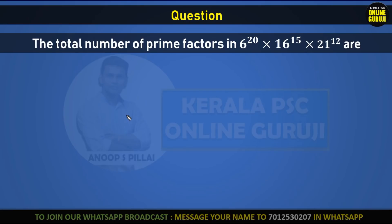Let's look at the total number of prime factors in 6 raised to 20, 16 raised to 15, and 21 raised to 12. So, what is the product? There are three products.